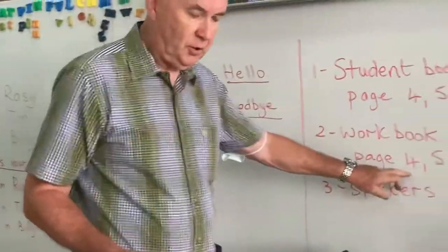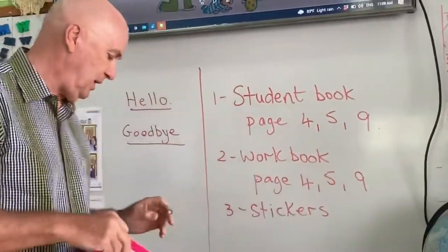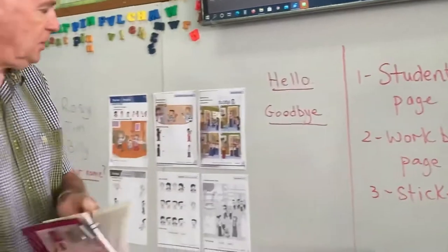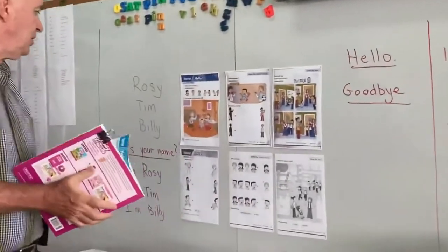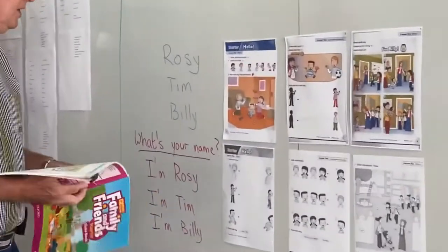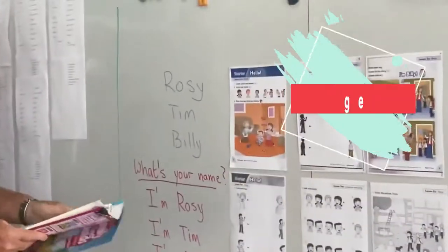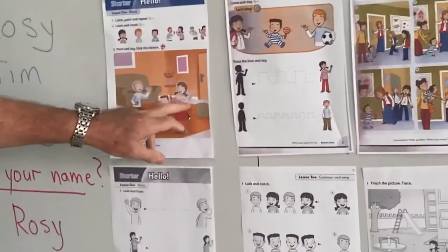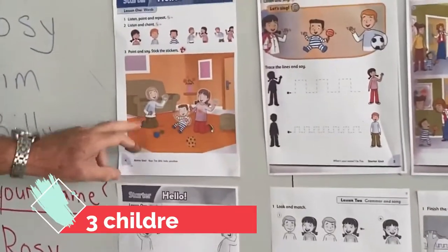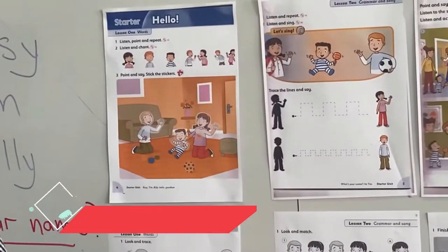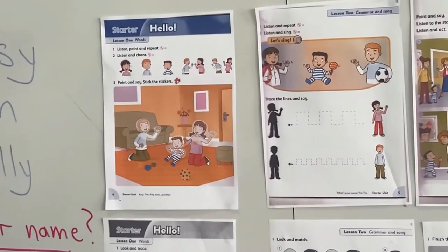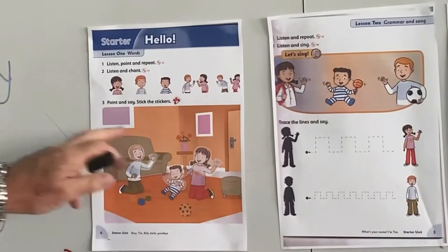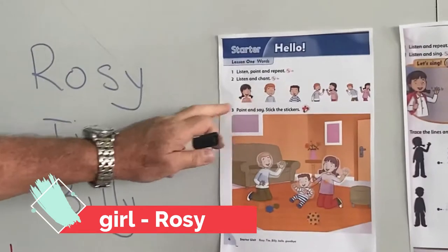Page 4, page 5 and page 9. Okay, let's start. Let's go to student book, page 4. And here we have three children.